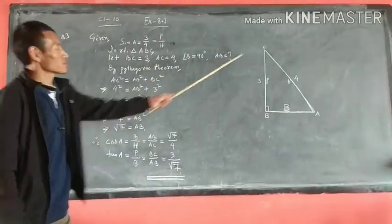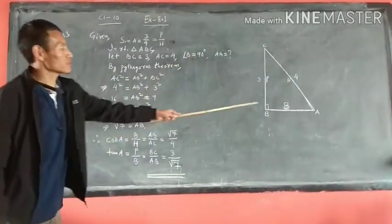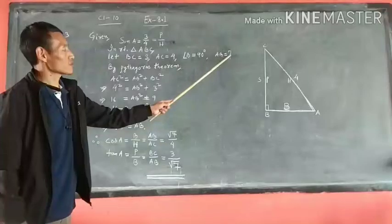And angle B equals 90 degrees. AB equals question mark, that means we are going to find out base AB.